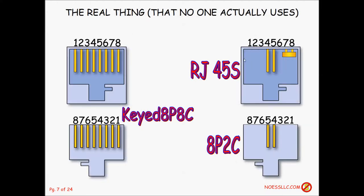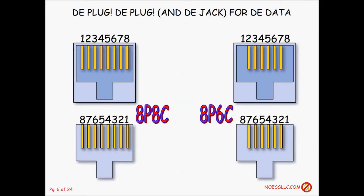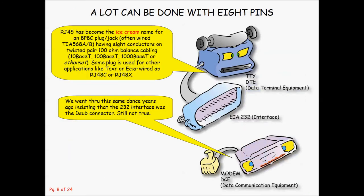The only place an RJ45 designation is correct is as an electrical standard — how you put the wires down and its function, which was some kind of data function. I've never seen one, and I'd be willing to bet 99.99% of people saying 'RJ45' have never seen one either. Take my word for it — I've been doing this for years. I use that same 8-position 8-contact connector for T-type and E-type carrier; it's called an RJ48C. It's still an 8x8 until I put the wires down, then it becomes an RJ48.